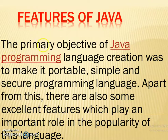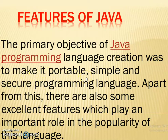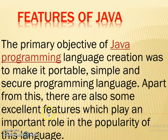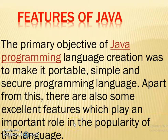The primary objective of Java programming language creation was to make it portable. Java is a simple and secure programming language. Apart from this, there are also some excellent features which play an important role in the popularity of this language. This language has very important features available.